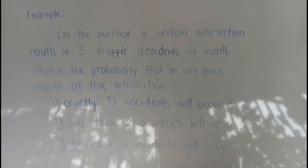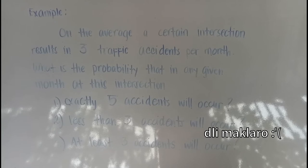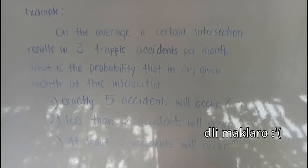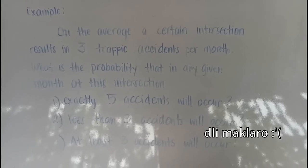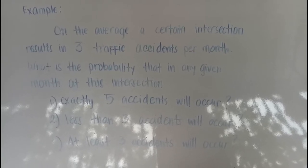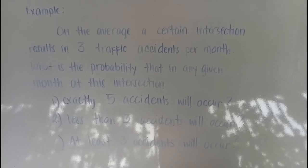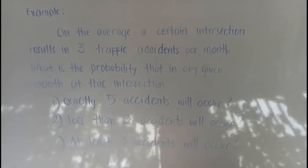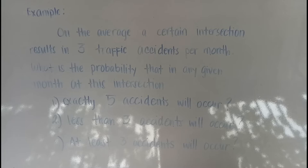We have an example. On the average, a certain intersection results in 3 traffic accidents per month. What is the probability that in any given month at this intersection: Number 1, exactly 5 accidents will occur. Number 2, less than 3 accidents will occur. Number 3, at least 3 accidents will occur.